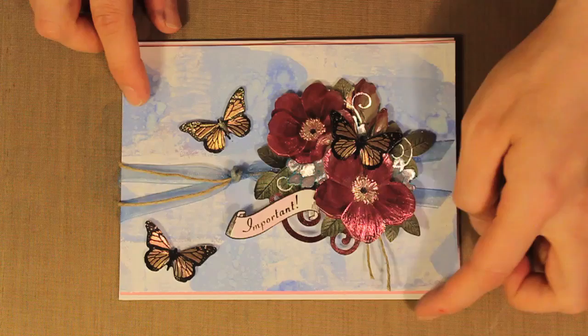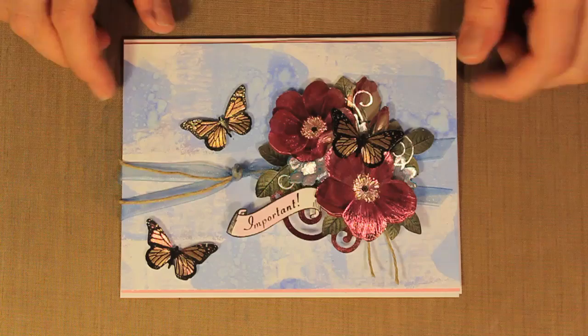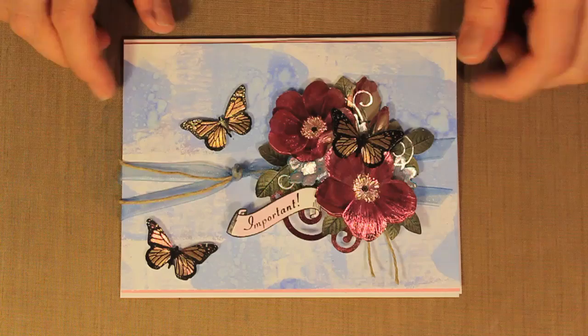I've got some sheer ribbon and some twine on here going in both directions just to add a little bit of extra texture to my card. So this is how you can brayer with your Spectrum Noir alcohol ink refills.